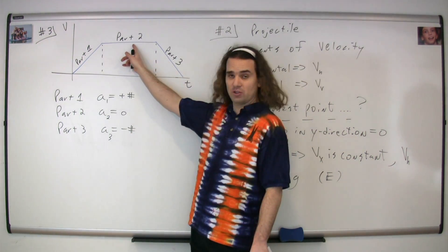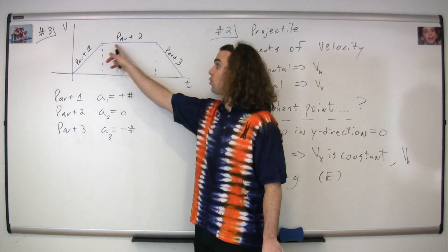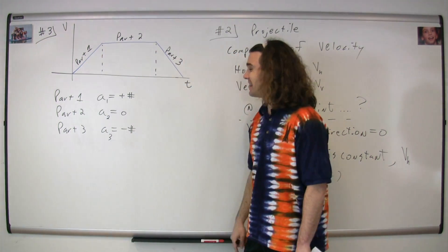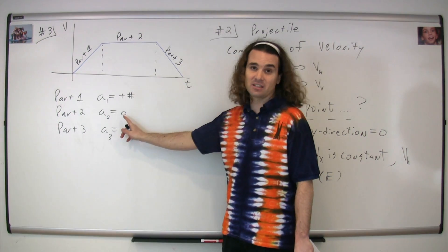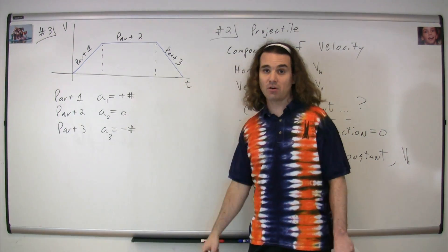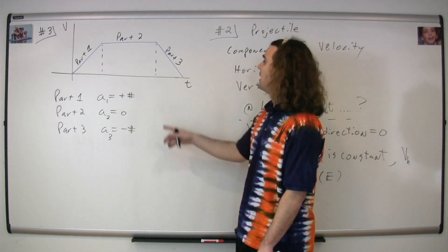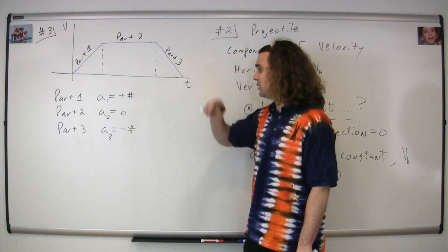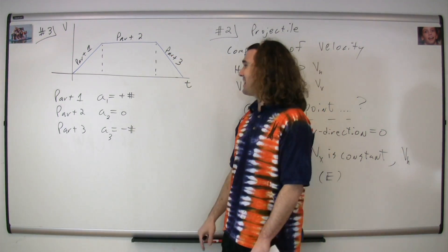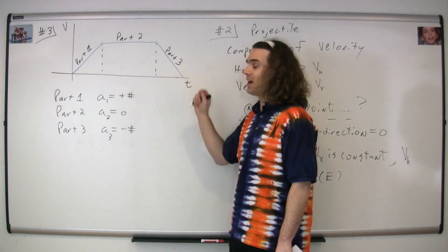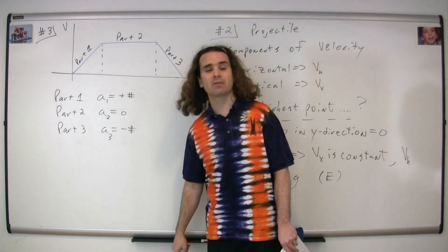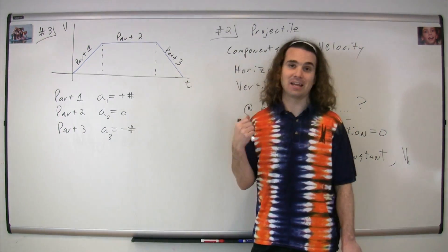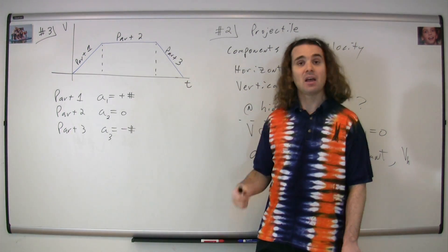You can see for part two that the slope is horizontal, therefore it has an acceleration of zero for part two. And for part three, you can see that the slope is a constant negative value, therefore the acceleration for part three is constant and negative.